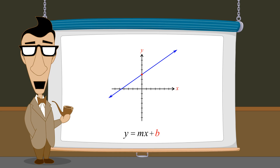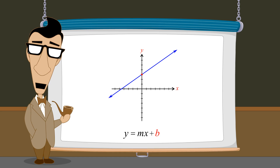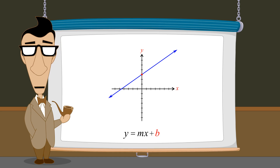The y-intercept is a point on the y-axis with coordinates (0, b). The slope-intercept form has the advantage of being simple, but is only useful when we know the exact point where the line crosses the y-axis.